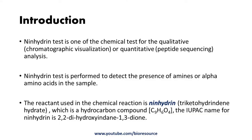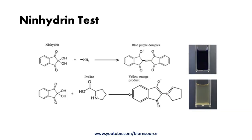All amino acids having an alpha amino group, when heated in excess ninhydrin, give a purple colored product — that is the basis of this test. Only proline and hydroxyproline, which contain a secondary amino group, produce a lower condensation product. The color intensity is proportional to the concentration of amino acids, and the reaction gives a blue colored product when heated at high temperature.